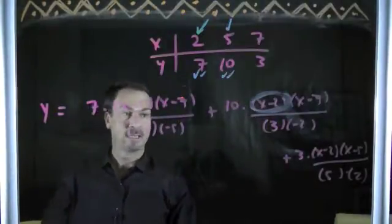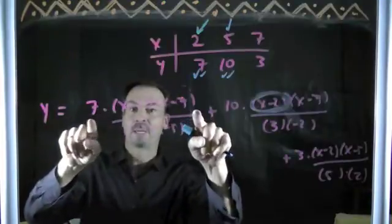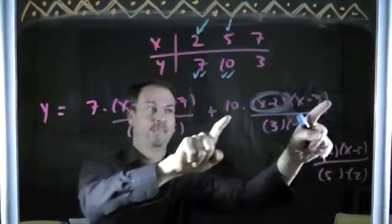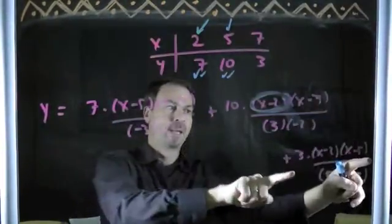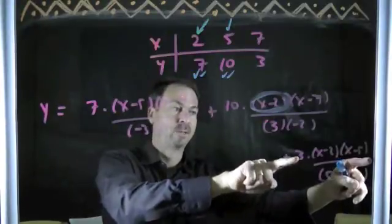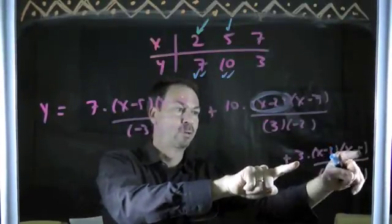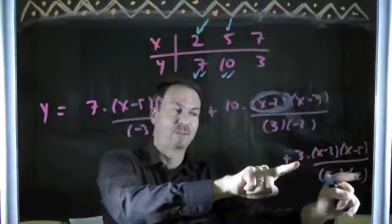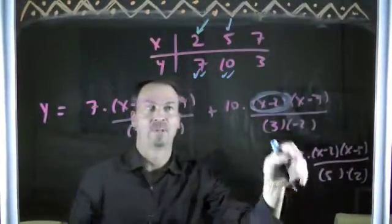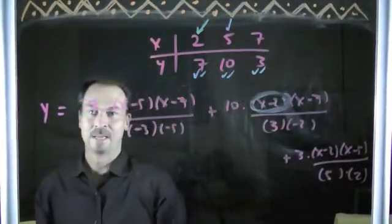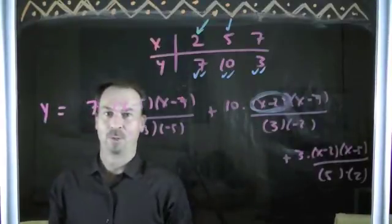And again, when x is 7, this piece vanishes. This piece vanishes. And this piece survives. But when I actually put in x equals 7, 3 times 5 times 2. 5 times 2 on the top, 5 times 2 on the bottom, cancels out. I just get the number 3. There is a quadratic that satisfies my work.